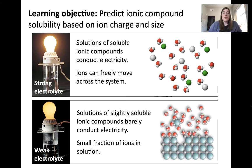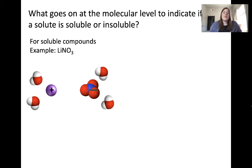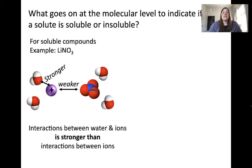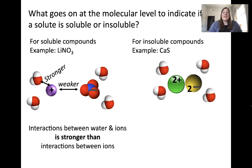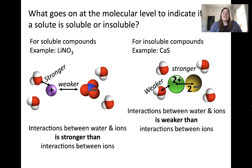Let's look at the molecular-level reasoning behind why some solutions are strong, some are weak, and some are non-electrolytes. In the case of a soluble compound such as lithium nitrate, the attraction between the ions that make up the ionic lattice is stronger with water than with themselves, causing the compound to be soluble. For an insoluble compound like calcium sulfide, the opposite is true — the attraction between ions in the lattice is stronger than with water, so the compound is insoluble.